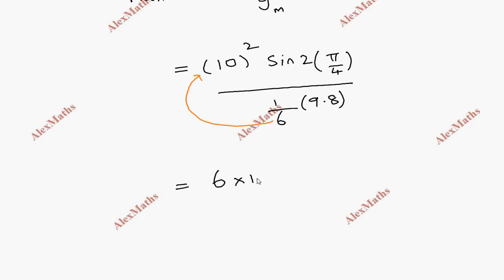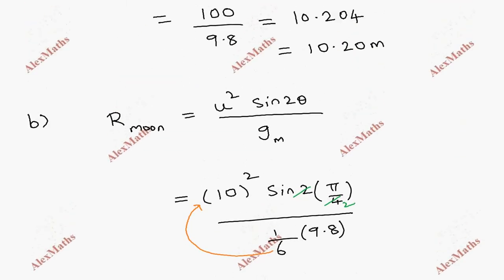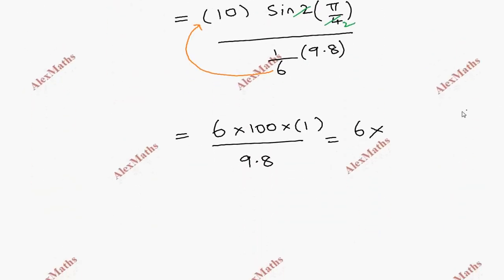So 6 into 10 squared is 100, whole divided by 9.8. And as usual, sin π/2 is 1. So once again, 6 into 100 by 9.8. We calculate 100 divided by 9.8 equals 10.204, then multiply by 6.